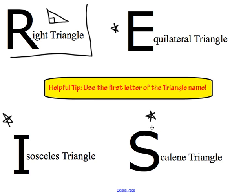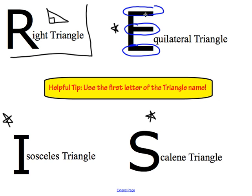Looking at our remaining three triangles, I wrote the first letter of each triangle really big: equilateral has the big E, isosceles has the big I, and scalene has the big S. The hint for the E is that there are three lines in the letter E that are the same — the top, the middle, and the bottom. Therefore, in an equilateral triangle, three sides are the same.